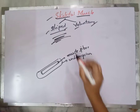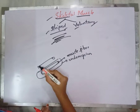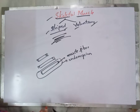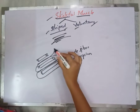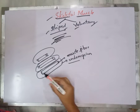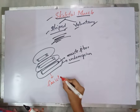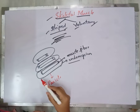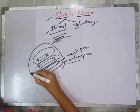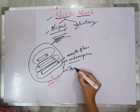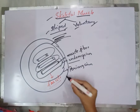Each muscle fiber of skeletal muscle is surrounded by a layer called endomysium. A skeletal muscle contains many such muscle fibers, and these muscle fibers together constitute a fascicle. The entire fascicle is surrounded by a layer called perimysium, and above the perimysium there is a layer called epimysium.